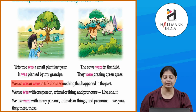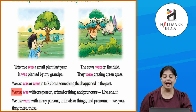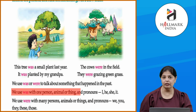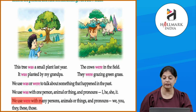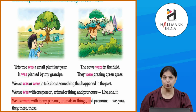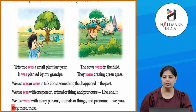We use 'was' or 'were' to talk about something that happened in the past. We use 'was' with one person, animal, or thing, and pronouns like I, he, she, it. We use 'were' with many persons, animals, or things, and pronouns like we, you, they, these, those.